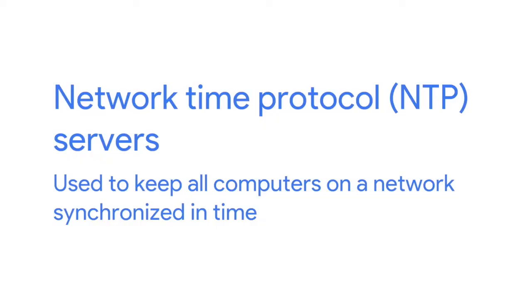It's worth calling out that DHCP can be used to configure lots of things beyond what we've touched on here. Along with IP address and primary gateway, you could also use DHCP to assign things like NTP servers. NTP stands for Network Time Protocol and is used to keep all computers on a network synchronized in time. So DHCP can be used for more than just IP, subnet mask, gateway, and DNS server.